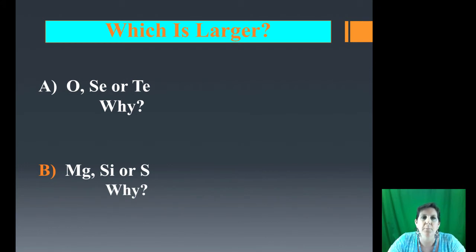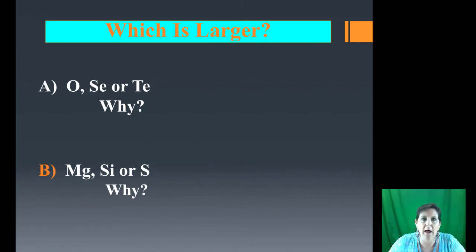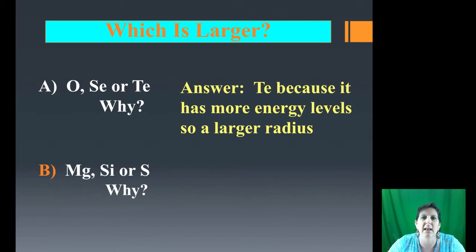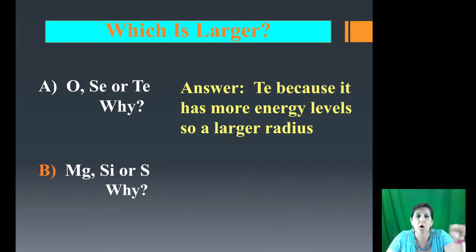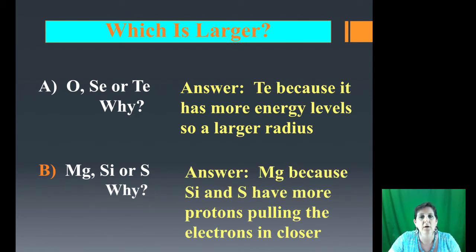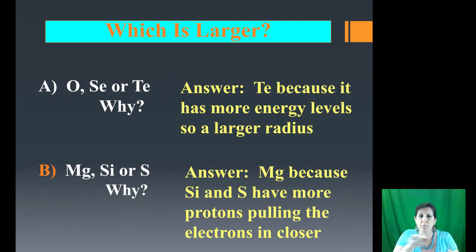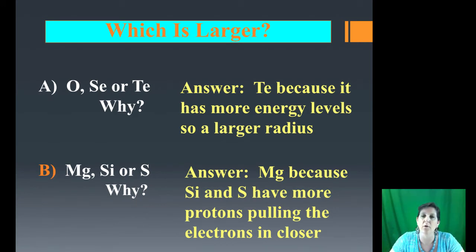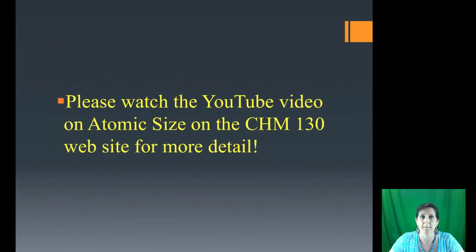Practice questions on atomic size: Which is bigger — O, S, Se, or Te? These are all in the same column, so the one furthest down, Te (tellurium), is the biggest because it has the most energy levels. What about Mg, Si, or S? Those are on the same row. The bigger one is Mg, because silicon and sulfur have more protons pulling their electrons in closer. When on the same row, as atomic number increases, the atom gets a little smaller. So Mg is the biggest. There is a YouTube video on the Chem 130 website on atomic size for more detail — please watch it.